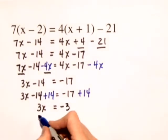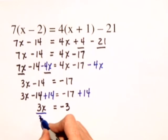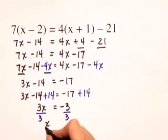The last step is to divide both sides by 3 and we get our solution that x is equal to negative 1.